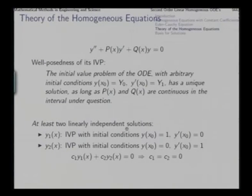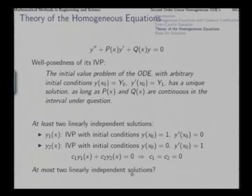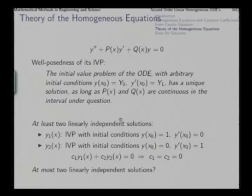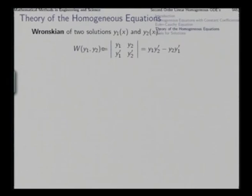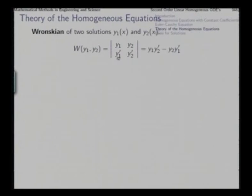Can we say there are at most two linearly independent solutions? Yes—there are exactly two linearly independent solutions for this second-order differential equation. To establish this, we first define the Wronskian of two solutions y₁ and y₂ as the determinant of the 2×2 matrix [y₁, y₂; y₁′, y₂′], which equals y₁y₂′ − y₂y₁′.